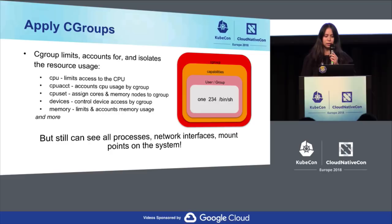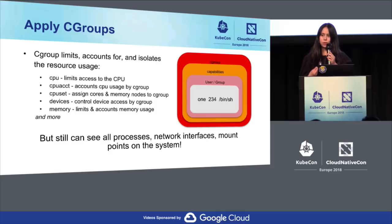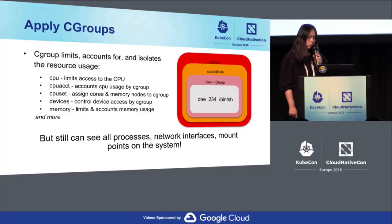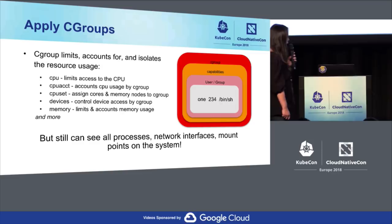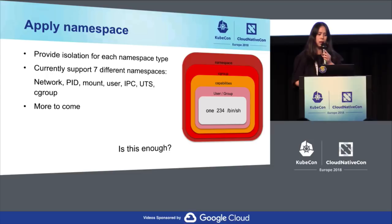We use cgroups to limit, account for, and estimate the resource usage of containers. We've been using this in Borg since 2007, when the first cgroup concept was pushed to the Linux upstream kernel. Using cgroups, we control what a container can use. But containers can still see all processes, network interfaces, and mount points on the system. What can we do?